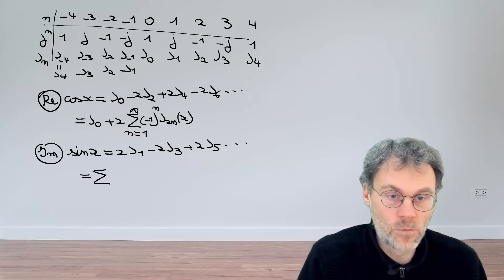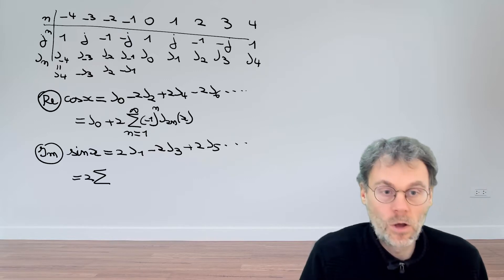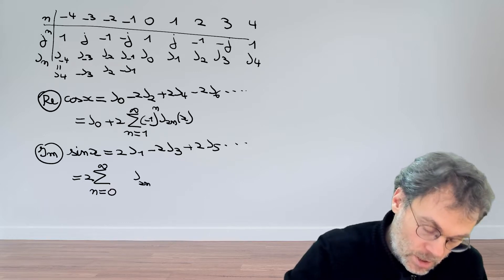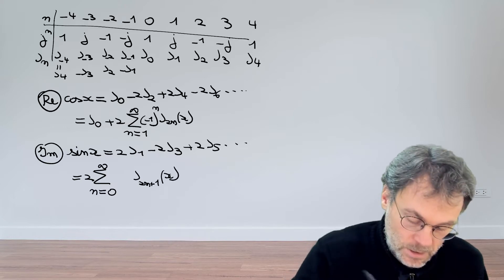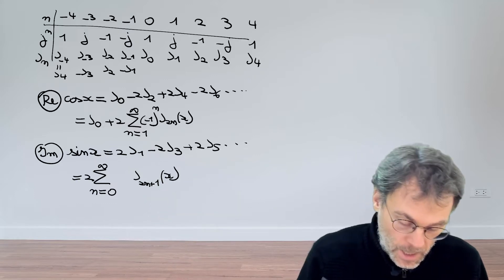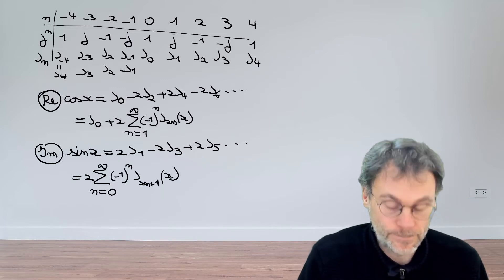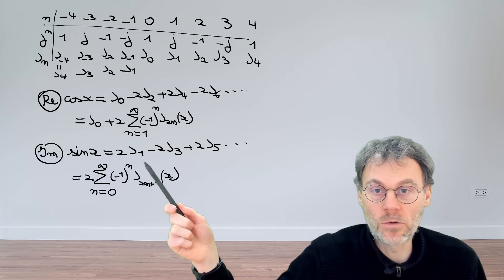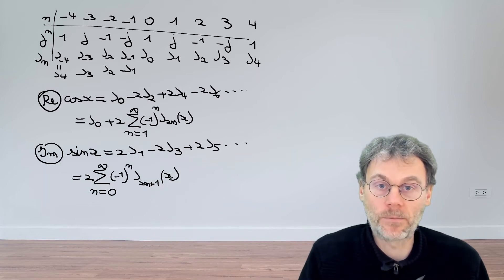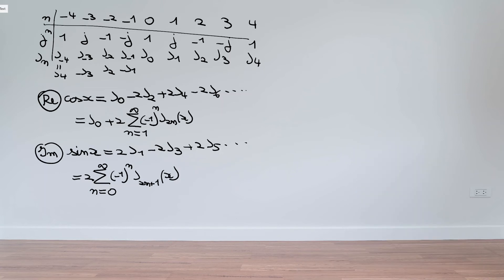And also here, we can write this a little bit more compact as two times a summation over all odd powers. So let's have an n going from 0 to infinity, and then J_{2n+1}(x). So the first term that we have for n equal to 0 is indeed 1. And then for sine, we have minus 1 to the power of n. If we put n equal to 0 here, we have minus 1 to the power of 0, that's 1, and indeed our first term should have a positive sign. So this is how we show that these equations are true.